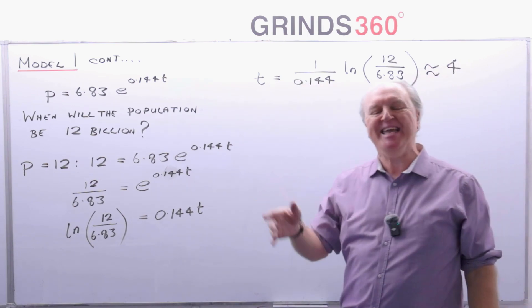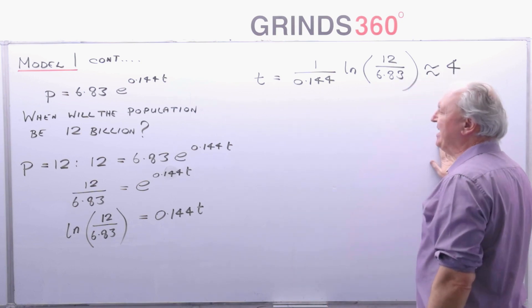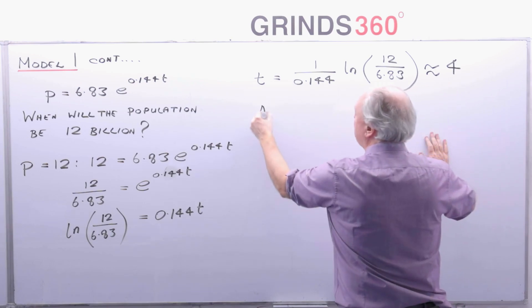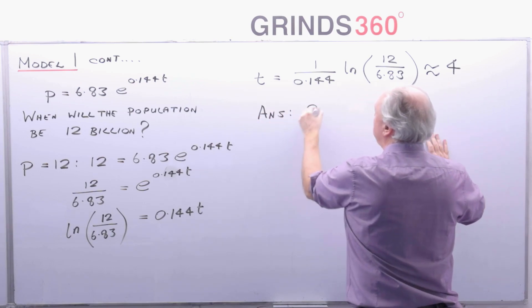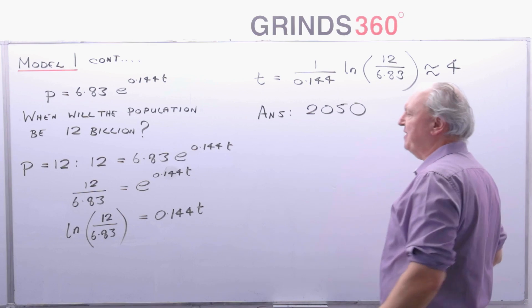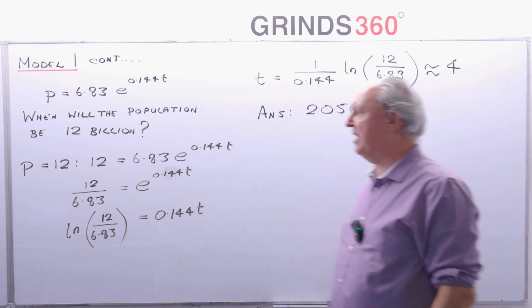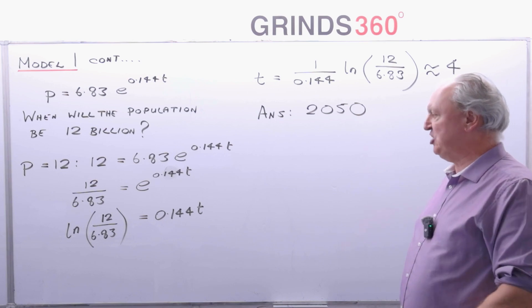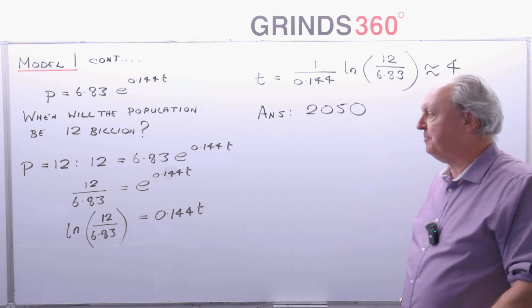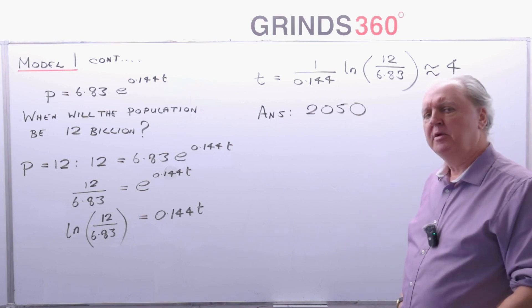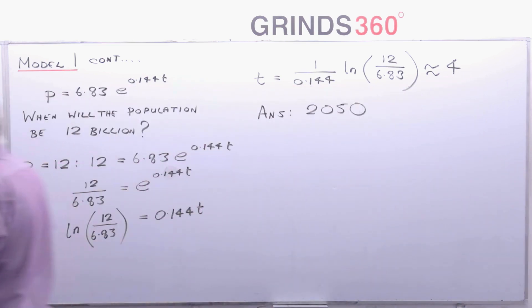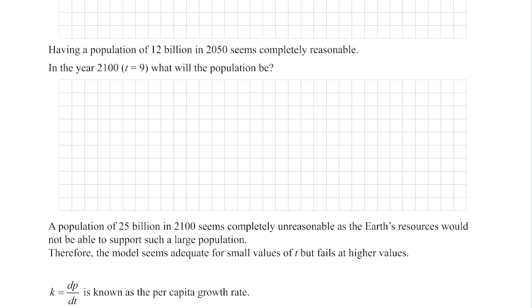Remember that's 4 decades. So it's 4 decades after 2010. 4 decades after 2010 gives me a year of 2050. But that sounds reasonable. I mean, the population now is just over 8 billion. So in 2050, the population could well be at its carrying capacity of 12 billion. So far, my model seems to work okay.